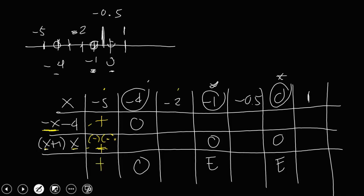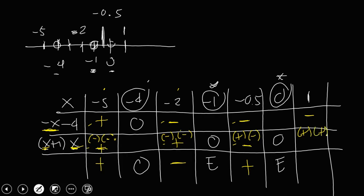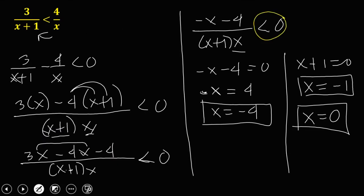For x equals negative 2: negative negative 2 is positive 2 minus 4 is negative 2. Negative 2 plus 1 is negative 1, x is negative 2 — numerator positive, denominator negative — result is negative. For negative 0.5: negative negative 0.5 is positive 0.5 minus 4 is negative 3.5, negative 0.5 plus 1 is positive 0.5, x is negative 0.5 — negative times negative is positive, result is positive. For x equals 1: negative 1 minus 4 is negative 5, 1 plus 1 is positive 2, x is 1 — negative times positive is negative, result is negative. Since we have less than 0, look for the negative result.